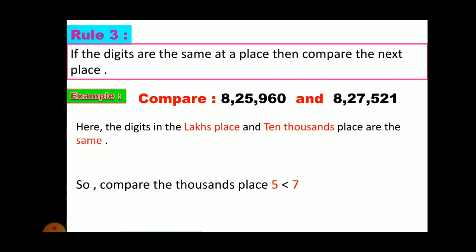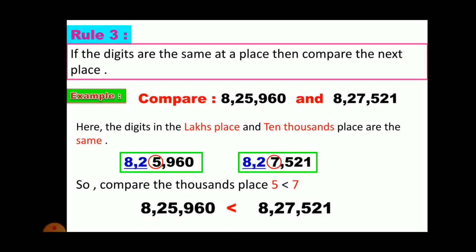So, compare the thousands place, at which we have 5 and 7. Since 7 is greater than 5, that's why 8,27,521 is greater than 8,25,960.